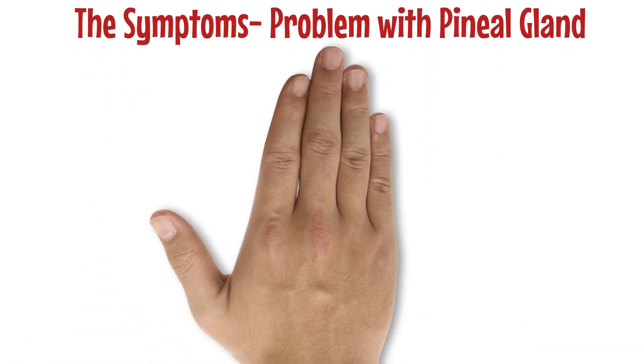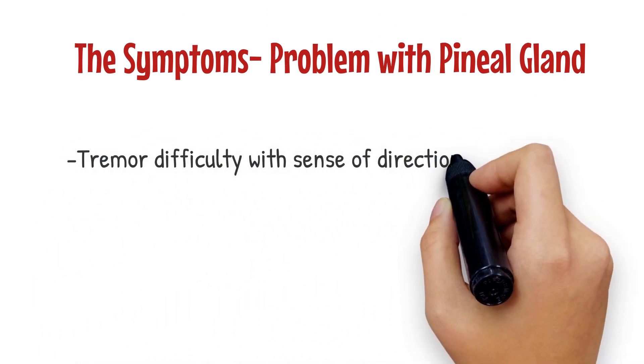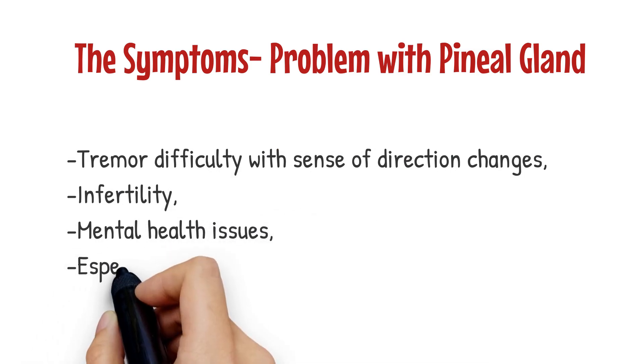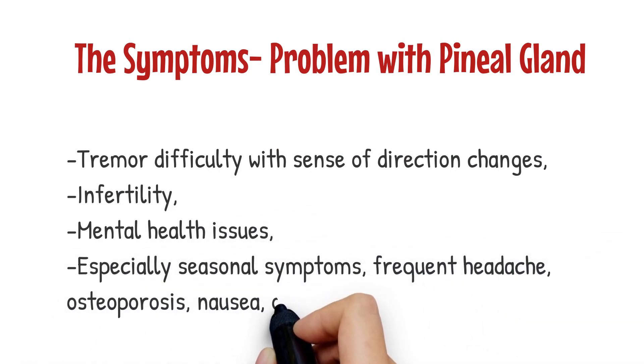The symptoms that confirm there is a problem with the pineal gland are tremor, difficulty with sense of direction changes, infertility, mental health issues, especially seasonal symptoms, frequent headache, osteoporosis, nausea, ovulation, and vomiting.